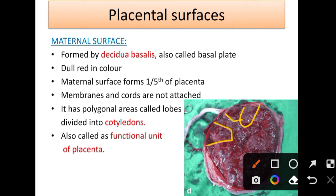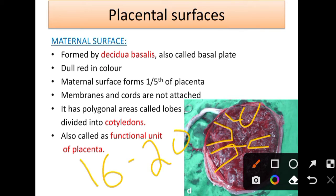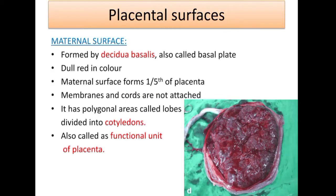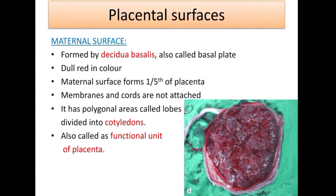When examining the maternal surface of the placenta, we must count how many cotyledons are present — it is usually 16 to 20 cotyledons in a term placenta. If we get fewer than 16 to 20, we must check whether any are missing and explore inside the mother if necessary. The maternal surface is called the functional unit of the placenta because all exchange of nutrients between maternal blood and the placenta occurs here.